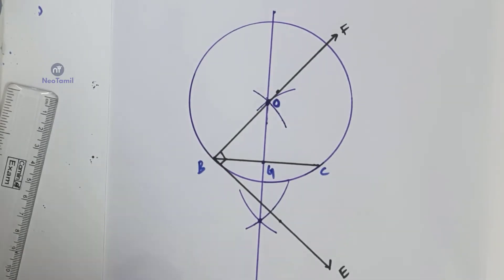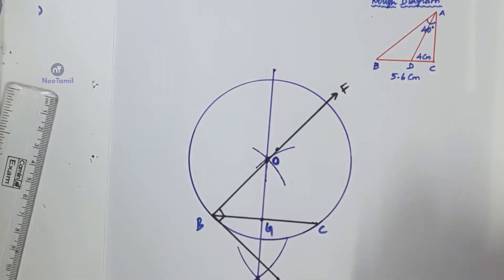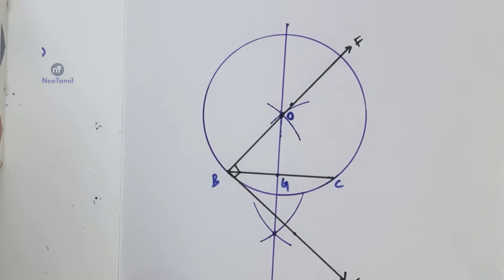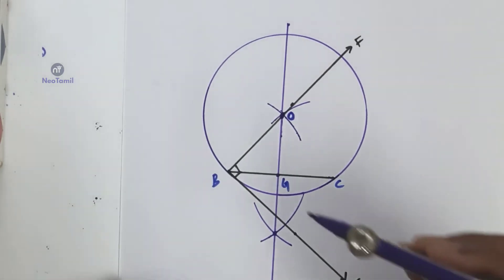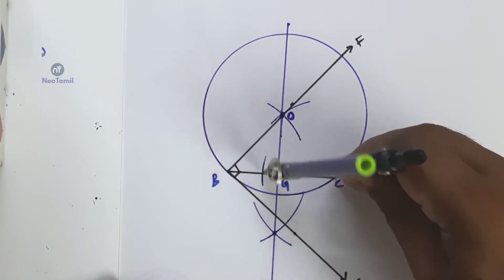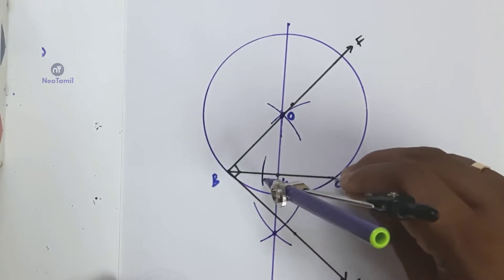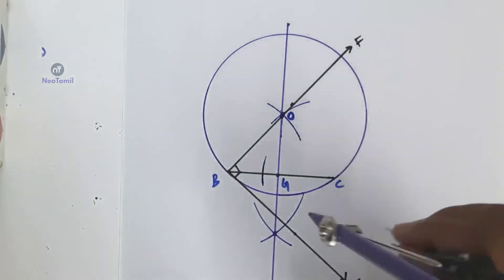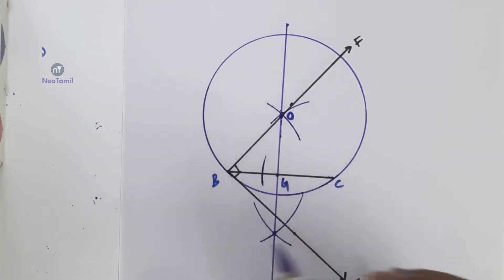In the rough diagram, we have one more measurement: CD equal to 4 cm. D is the point on BC. Using a compass set to 4 cm, from C as center with 4 cm as radius, draw an arc on the base BC to mark point D.